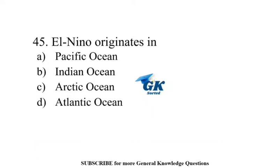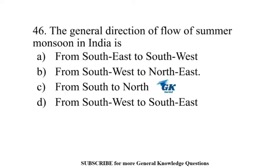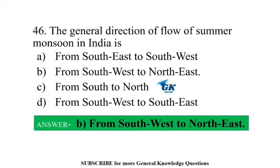El Niño originates in the Pacific Ocean. The general direction of flow of summer monsoon in India is from South-West to North-East.